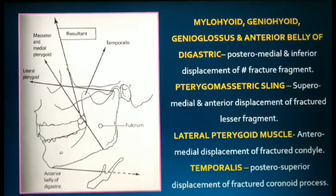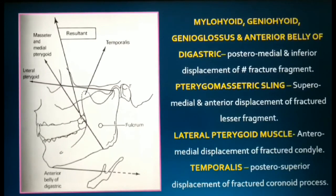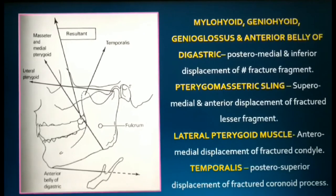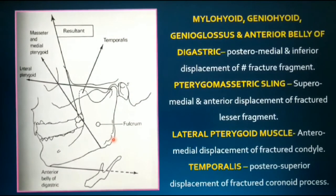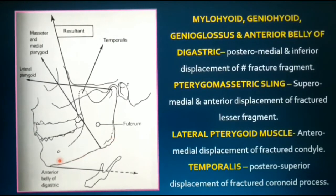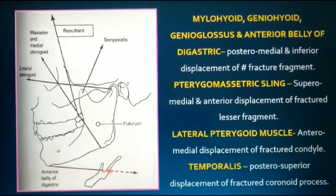The mandible is one bone whose muscle attachments have continuous functioning — be it mastication, speech, facial expressions, swallowing, or yawning. So you cannot expect the fracture to remain still once it has occurred. Displacement is a very common feature of a fracture, and it is important to understand the action of each muscle on a fracture. The first group is the suprahyoid muscles, which exert a force in the posterior, medial, and inferior direction. So if there is a fracture segment in the anterior mandible, it is displaced inward, backward, and downward, as seen in this diagram.